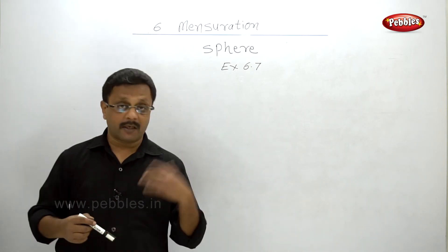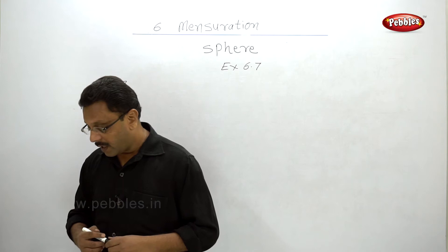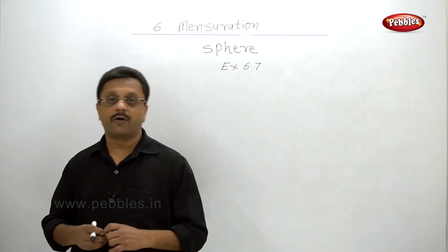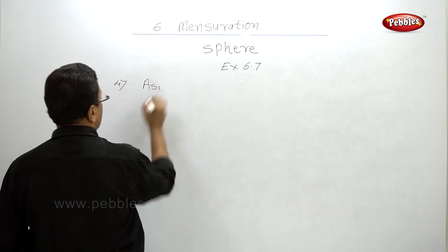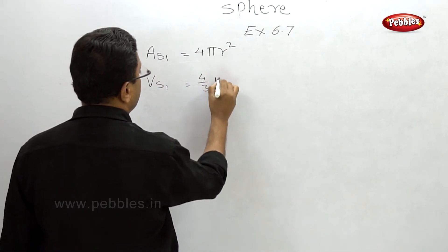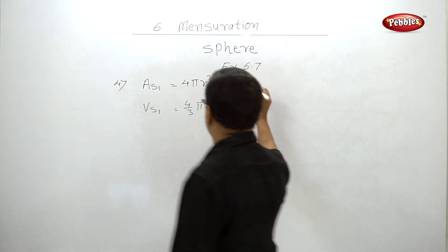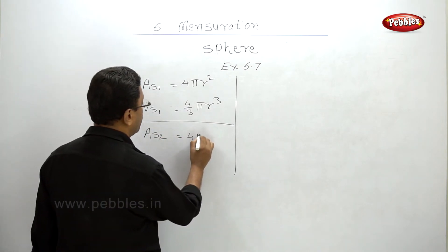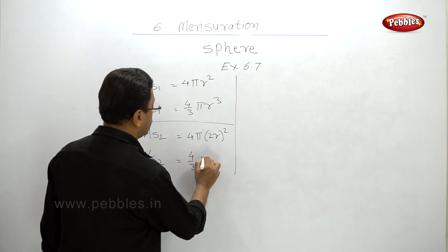Fourth example: if the radius of a sphere is doubled, what will be the ratio of its surface area and volume to that of the first sphere? The formula for surface area of sphere 1 is 4πr², and volume is 4/3 πr³. When the radius is doubled, the surface area of the second sphere is 4π(2r)² and the volume is 4/3 π(2r)³.